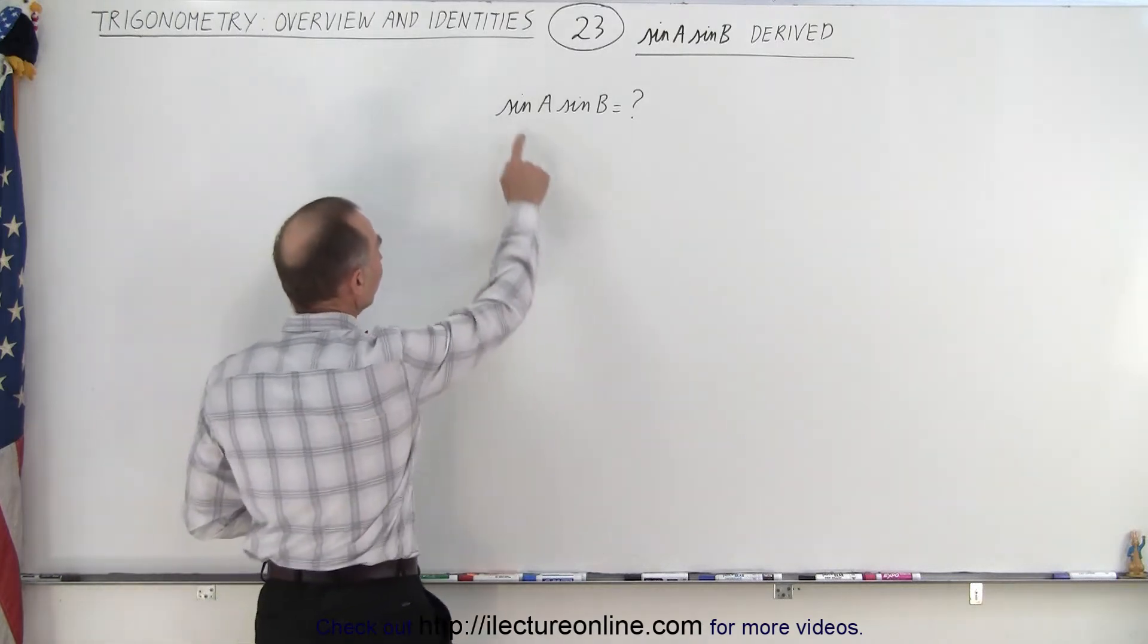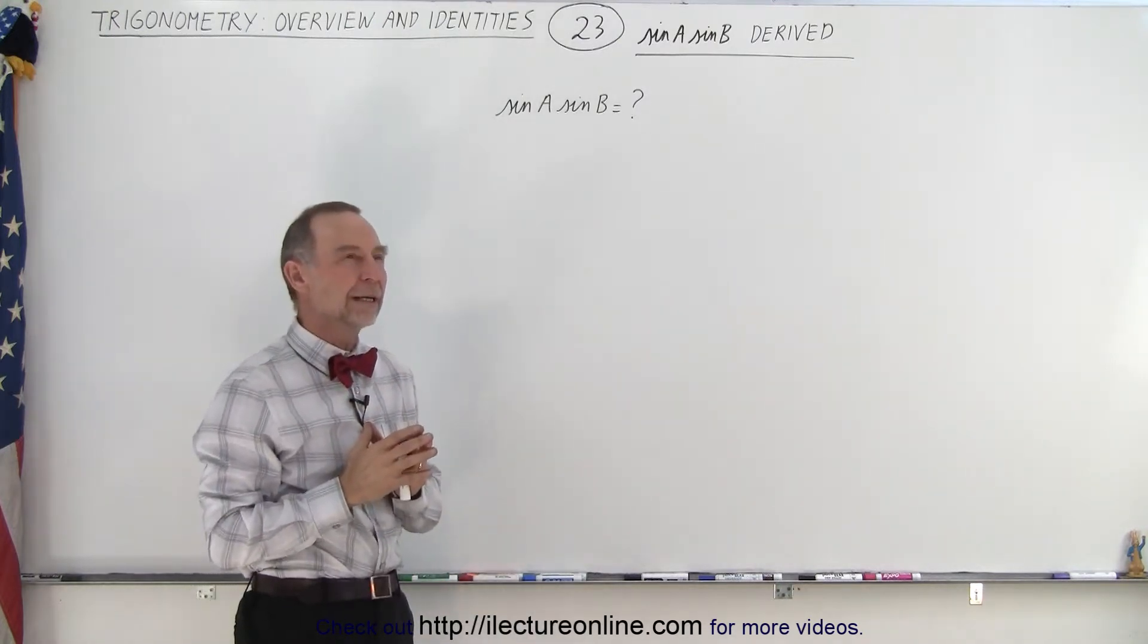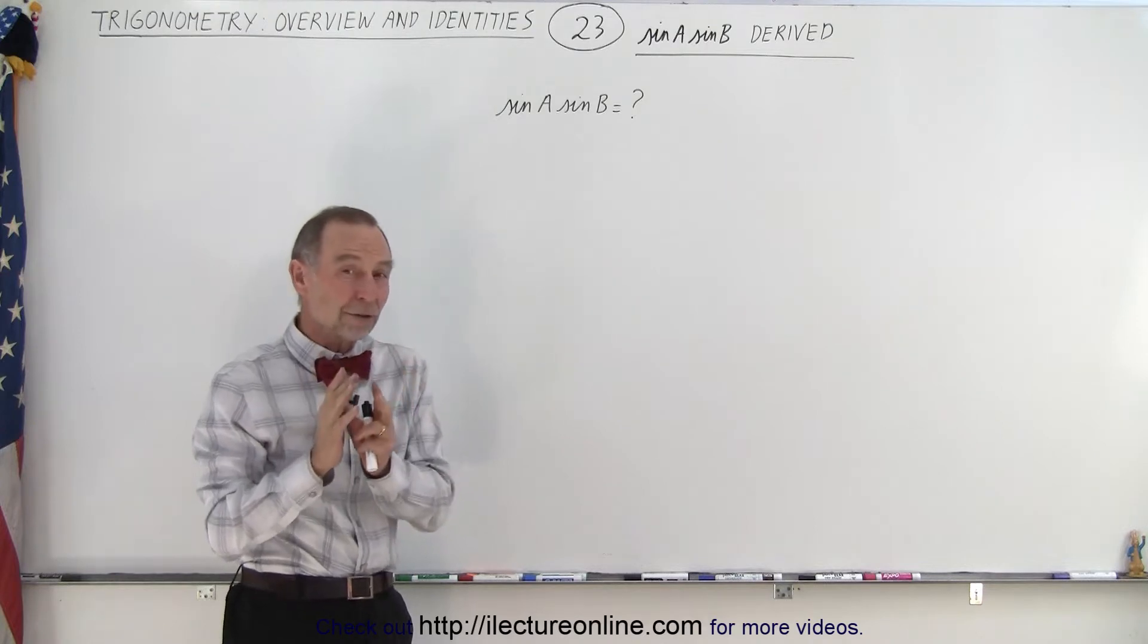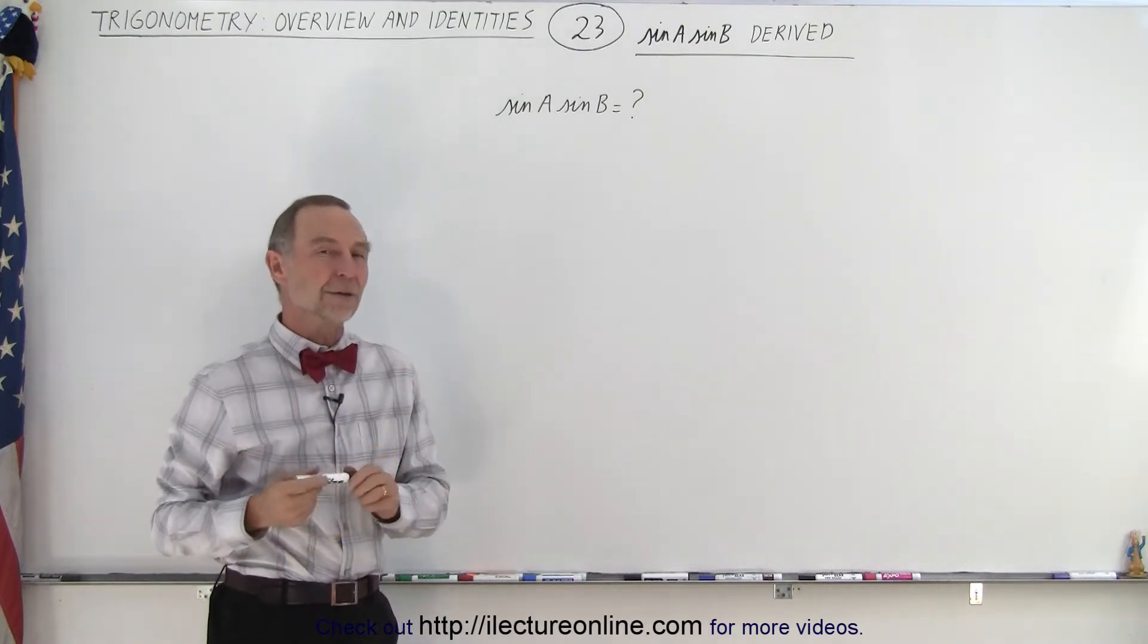You have to recognize that there's sine of one angle times sine of another angle. Where have we seen that before? Now you realize, oh, that is part of the identity when we have the cosine of the sum of two angles. For example,